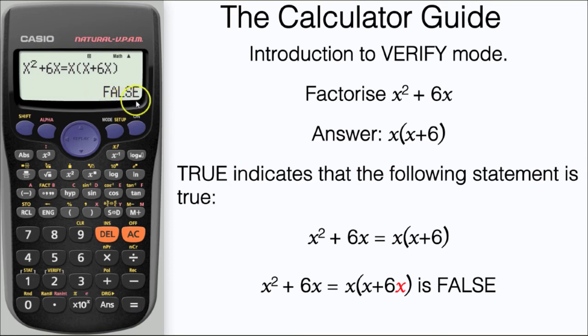And here we can see that x brackets x plus 6x is false. We've confirmed that it's the wrong answer.